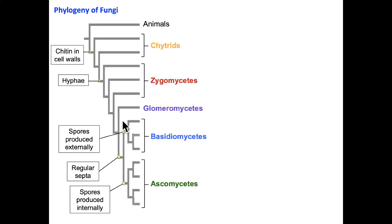Further derived characteristics appear in the form of septa. In the basidiomycetes and the ascomycetes, we find septa separating nuclei into different compartments within the hyphae. Septa are present only in the more derived fungi. Lastly, we can separate the basidiomycetes and ascomycetes by the nature of their fruiting bodies. In basidiomycetes, spores are produced externally on the fruiting body; in ascomycetes, spores are produced internally.